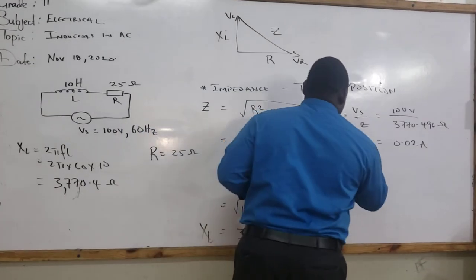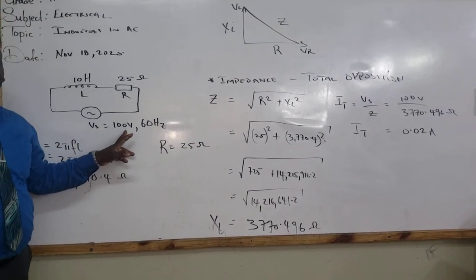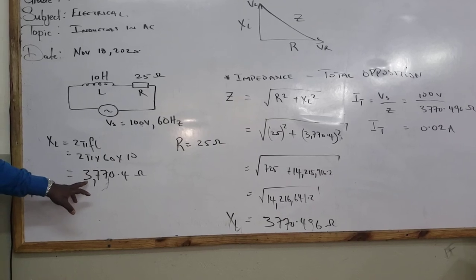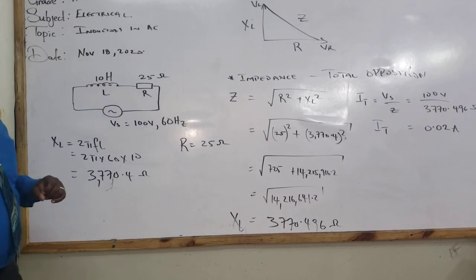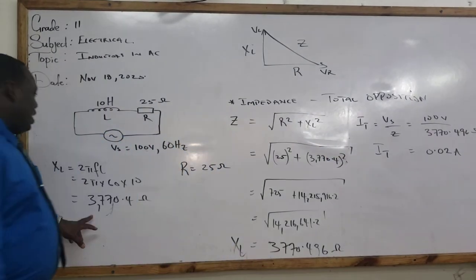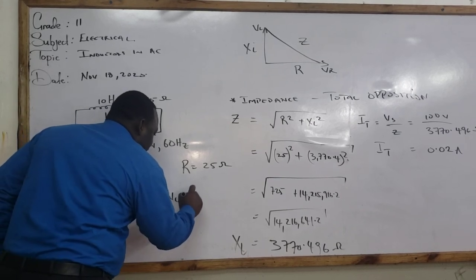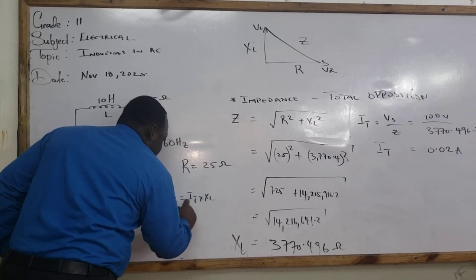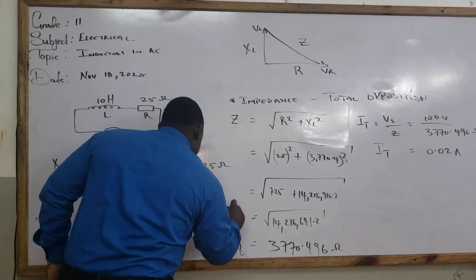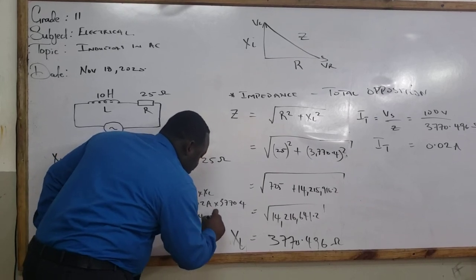So let us see if we can solve some things to help you to understand something. We have a total current flowing in the circuit, IT, which is equal to 0.026 amperes. Now, what is our voltage supply? Our voltage supply is 100 volts. But let us look at this. Through our inductor, we have an opposition of 3770, but we have 0.026 amperes going through our inductor. So if we should multiply our current by our opposition, what would we get for VL? Mr. Fraser. 754.08. So if we should say VL, it would be equal to IT times XL, which is 0.026 amperes times XL, which is 3770.4. We would get 754.08 volts.